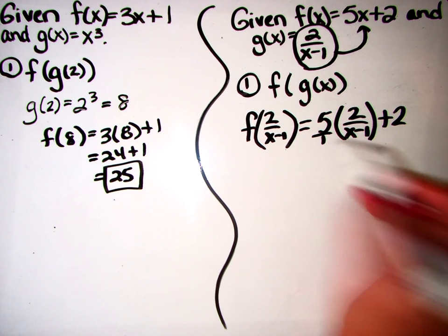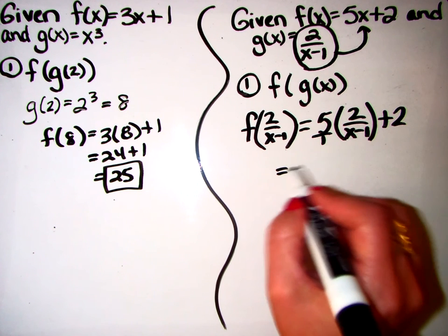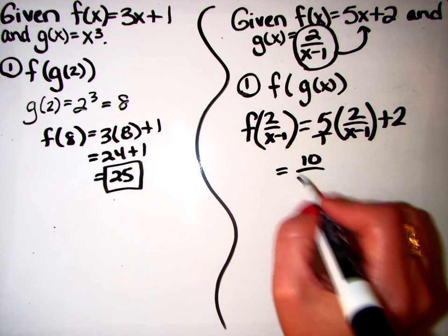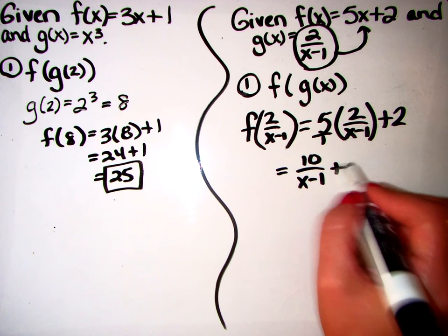So I'm multiplying, so let's just make that a denominator. So 5 times 2 is 10 over x minus 1 plus 2.